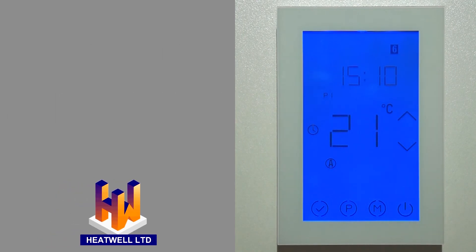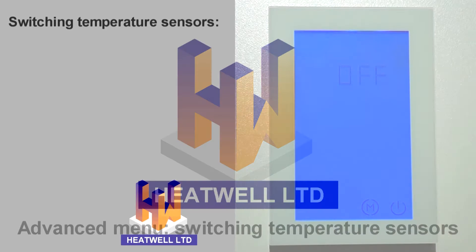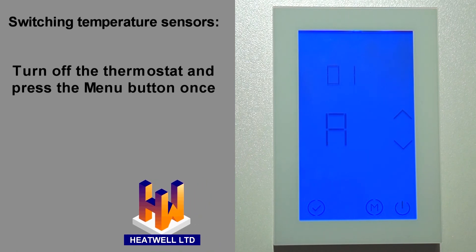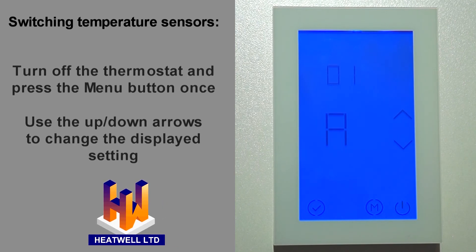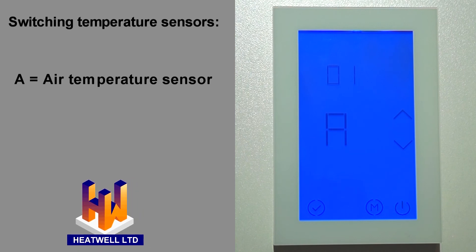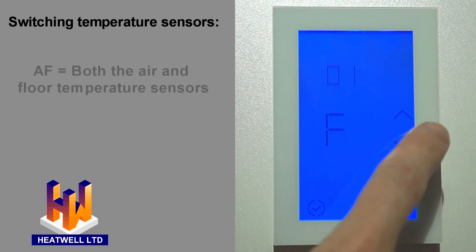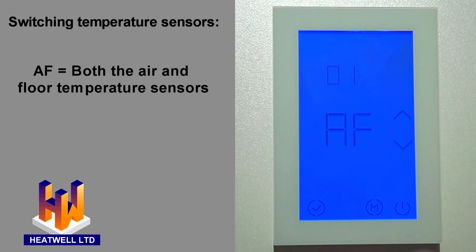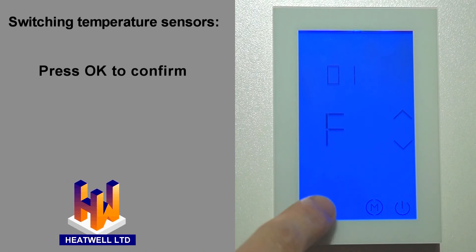Let's move on to advanced settings, starting with switching between temperature sensors. With the thermostat off, access the advanced settings menu by pressing the mode or menu button. Menu number 1 will be displayed, along with the chosen thermometer setting, which you can change by using the up and down arrows. A means the unit will use its air temperature sensor. F means the unit will use the floor temperature sensor. AF means the unit will use both the air and floor temperature sensors together. In this instance, we'll select F for floor. When you've made your selection, press the OK button to save and exit.